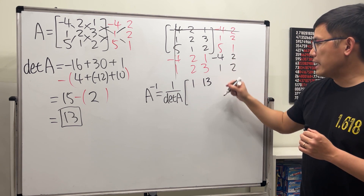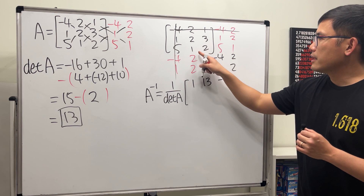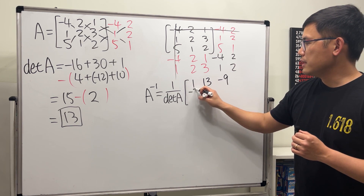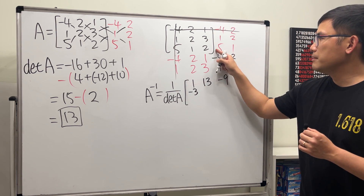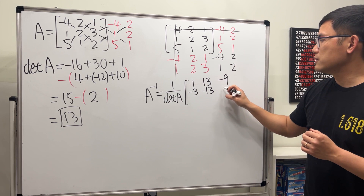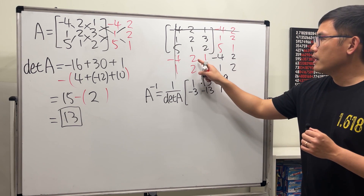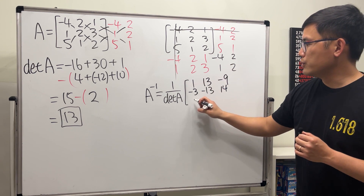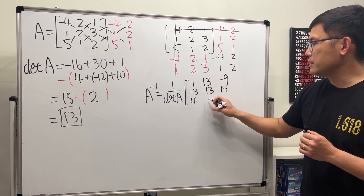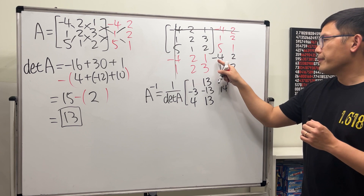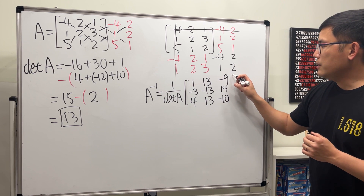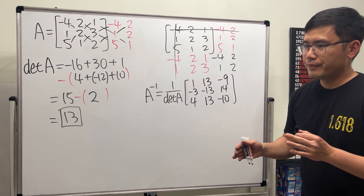Then 1 times 1 is 1 minus 10 is negative 9. Continue: 1 times 1 is 1 minus 2 times 2 is 4, so 1 minus 4 is negative 3. Then negative 8 minus 5 is negative 13. Then 10 plus 4 is 14. Then 2 times 3 is 6 minus 2 is 4. Then 1 plus 12 is positive 13. Lastly, negative 4 times that is negative 8 minus 2 is negative 10.